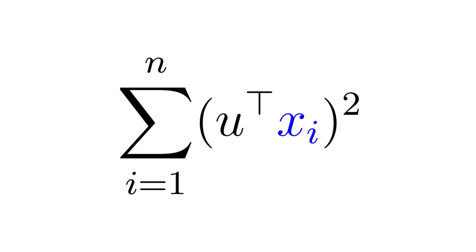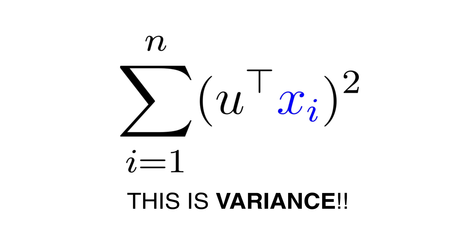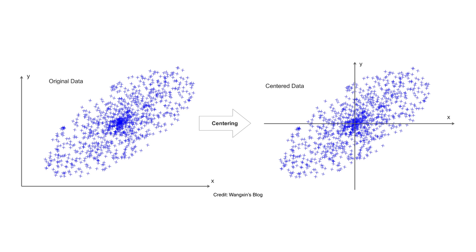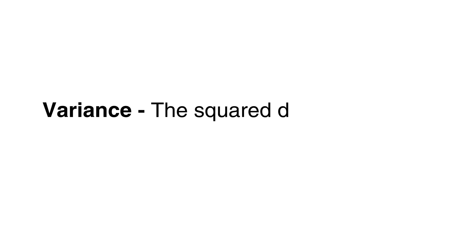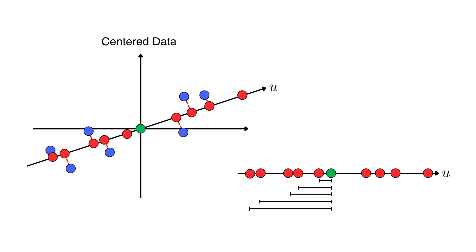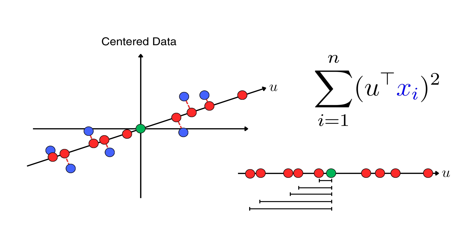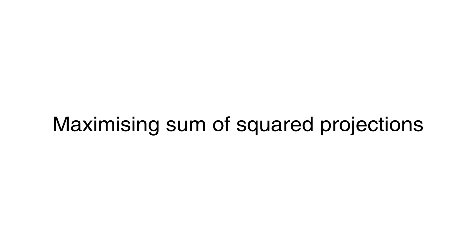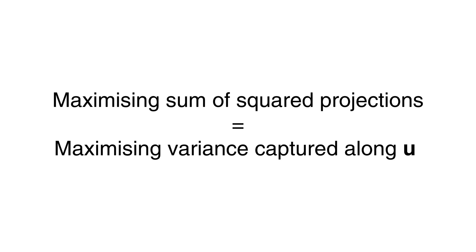This formula — the sum of squared projections — is exactly what variance measures when the data is centered, meaning the data has been shifted so that its average or mean is at the origin. This is because variance is defined as the squared distance of data points from the mean. So once the data is centered, projecting each point xi onto a direction u and squaring the result tells us how far that point lies along u relative to the mean. Summing up these squared projections gives us the variance of the data along that direction. That's why in PCA, maximizing the sum of squared projections is exactly the same as maximizing the variance captured along the chosen direction u.